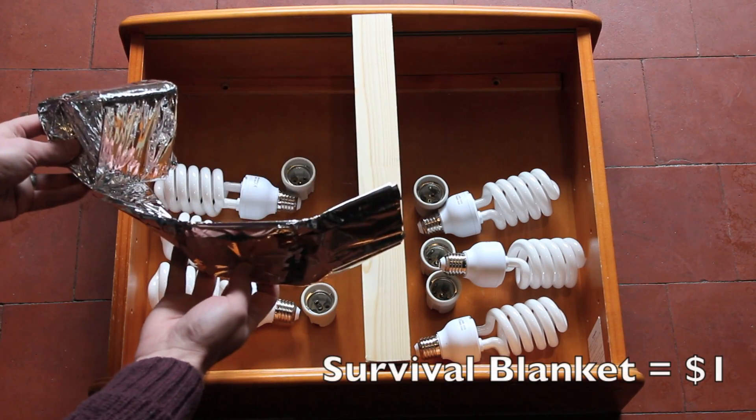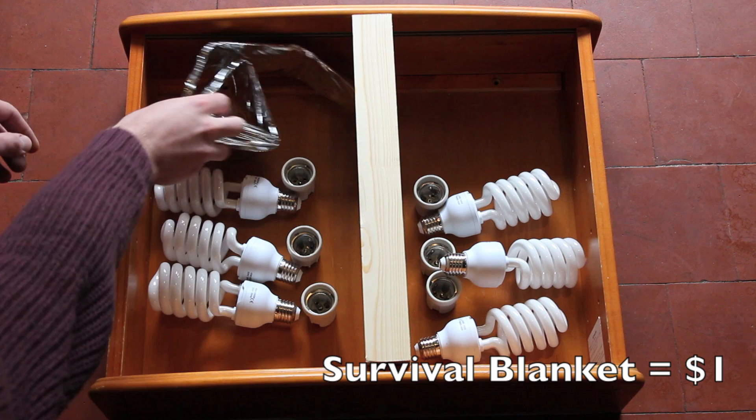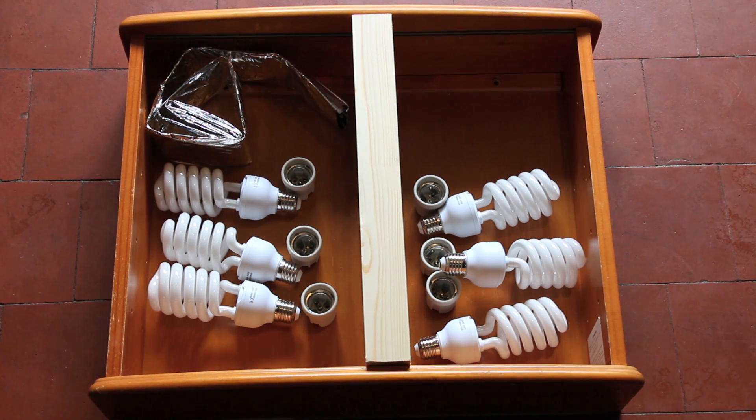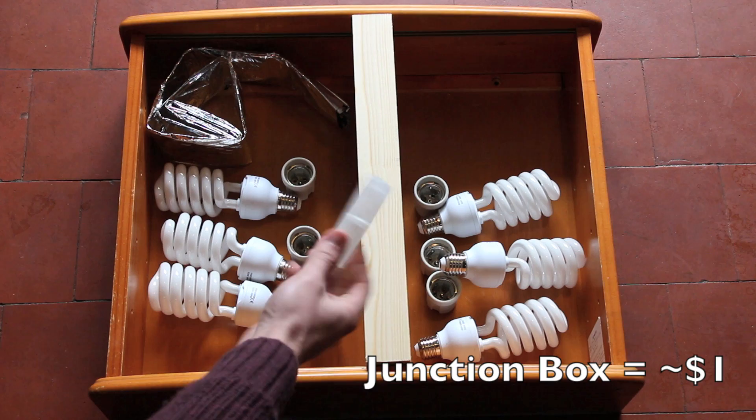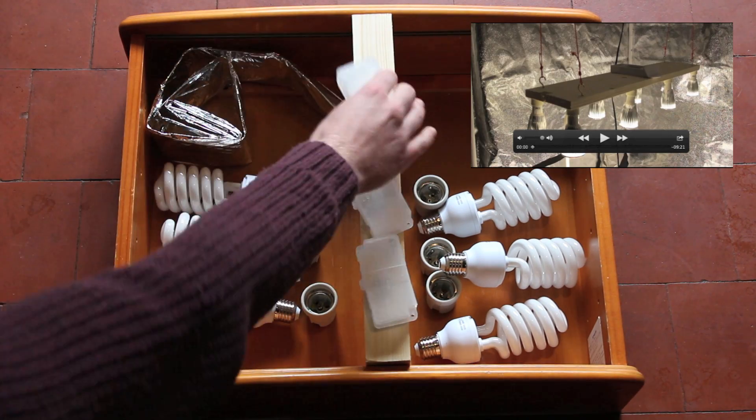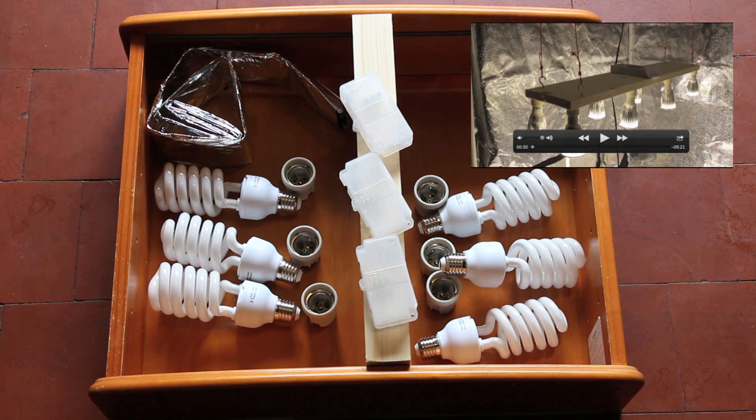These cost about seven dollars thirty each. I'm using a cheap survival blanket which cost about one dollar as a reflective background. I have a few of these junction boxes left over from my LED grow light, so I'm going to be using those to keep all the wiring safe.